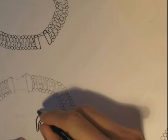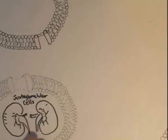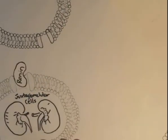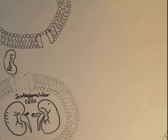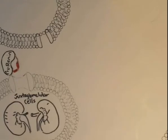Continuing from when we last left off, we learned that the juxtaglomerular cells of the kidneys secrete renin. Here we have renin being secreted out through the receptor and it goes into the plasma, or the blood vessels. We also talked about pro-renin, a precursor to renin, with an extra 43 amino acid chain locking the activation site, or the cleft. We'll use pro-renin as an example of how it cannot bind to angiotensinogen.